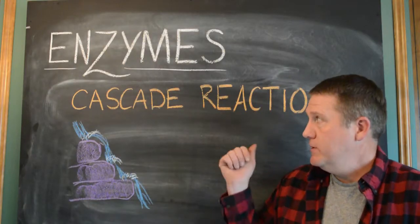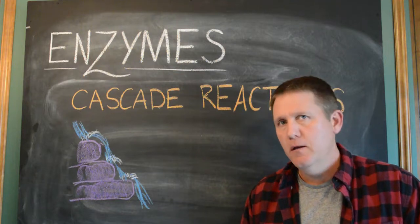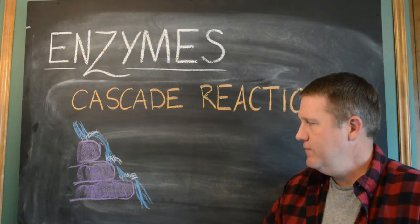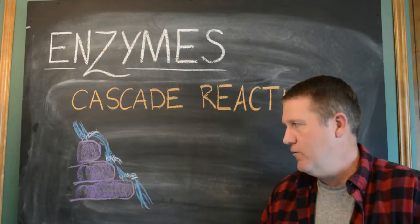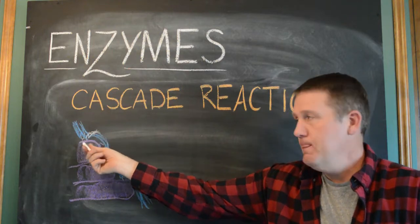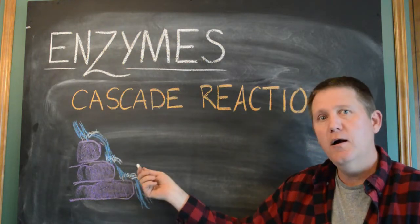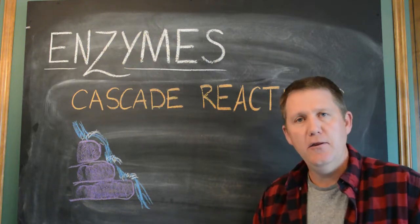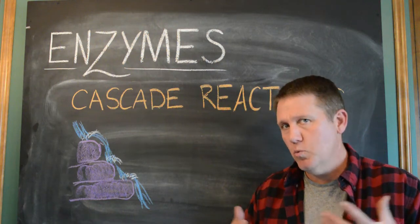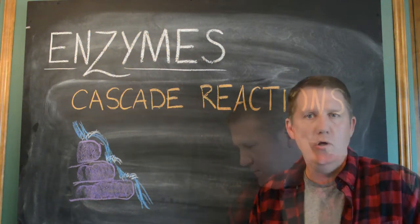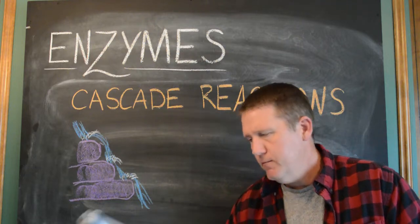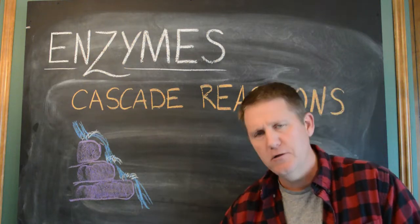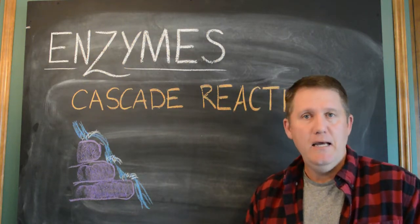The last topic with enzymes I want to bring up is cascade reactions. They're called cascade reactions because of the way they resemble a waterfall. You've got these rocks and the water falls down and cascades from one rock to the next rock to the next rock. In that sense, enzymes working together are kind of like that. Very often, enzymes work as teams rather than solo — just like you couldn't cook an entire dinner with one tool, especially not a garlic press.